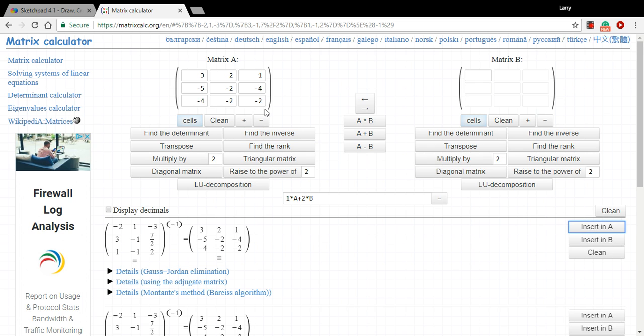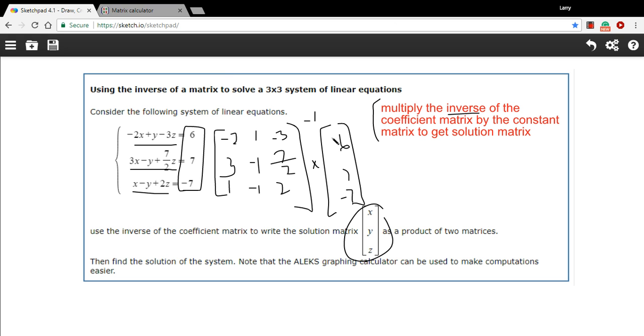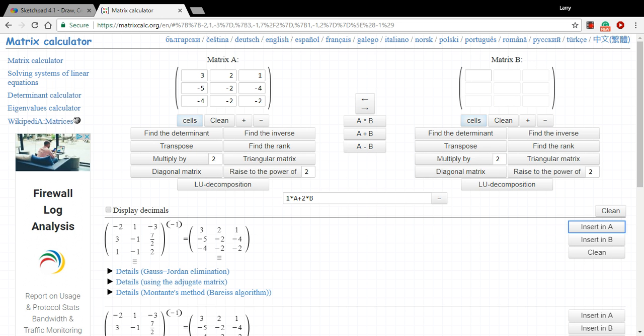So there's our inverse of the coefficient matrix. Now we need to multiply that by our constant matrix. I just want to remind myself so I don't get this wrong. 6, 7, and negative 7. So I'll put that in here. 6, whoops, 7, and negative 7.